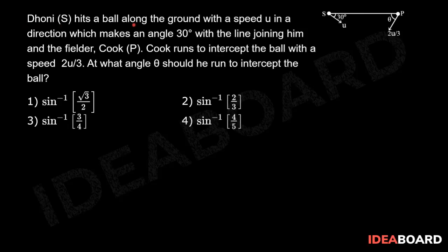Dhoni S hits a ball along the ground with a speed u in a direction which makes an angle 30 degrees with the line joining him and the fielder. Cook runs to intercept the ball with a speed 2u by 3. At what angle theta should he run to intercept the ball?